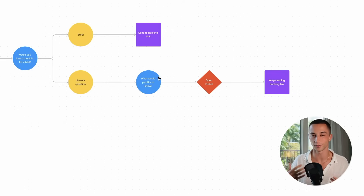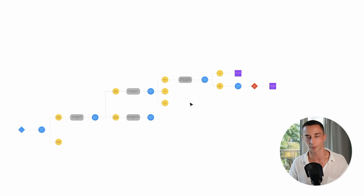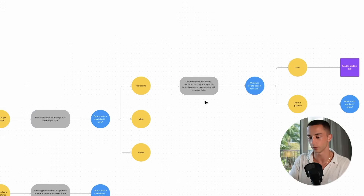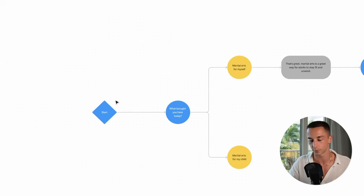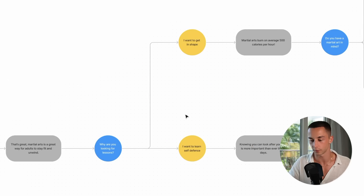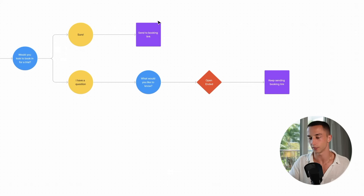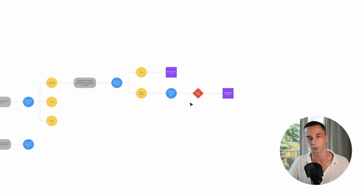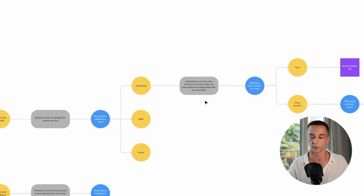Figma is great for this because it allows you to quickly draw up a diagram of how the conversation flow is going to go, the questions that will be asked, and the information that's captured. What you can see on screen is the top line of the chatbot — it starts with 'what brought you here today,' then options like martial arts for myself, martial arts for my child, why are you looking for lessons, and so on. Down here you can see the open loop of 'what would you like to know,' which queries the knowledge base. I was able to show this to the client, get validation, and once it's been approved, you're ready to move on to building.